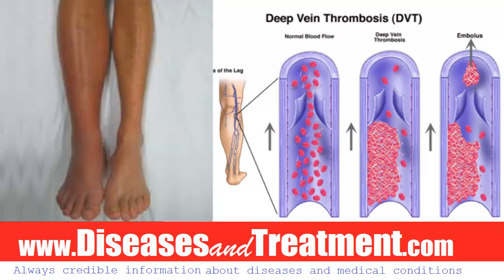In situations where anticoagulants cannot be used, an inferior vena cava filter is potentially considered to address the blood clot. Complications of DVT include pulmonary embolism and post-phlebitic syndrome. There are also other types of thrombosis, such as cerebral venous thrombosis, portal vein thrombosis, and cavernous sinus thrombosis.